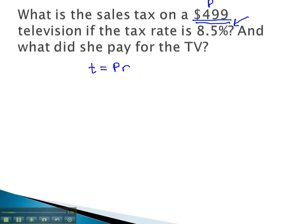But we need to change that to a decimal by moving the decimal point twice to the left. Using an extra zero for the extra space, we get 0.085 for the tax rate.